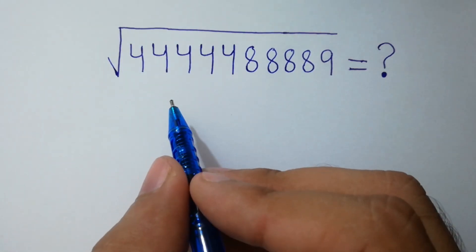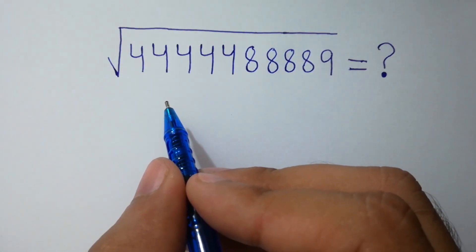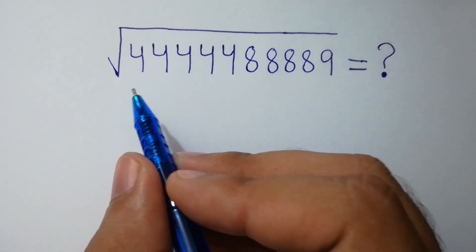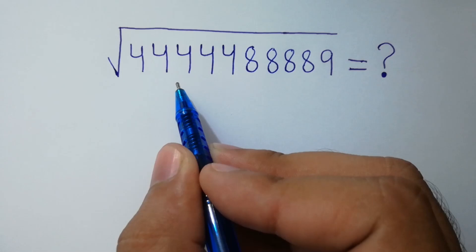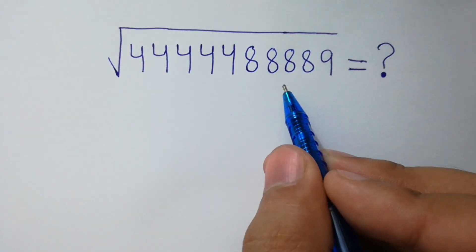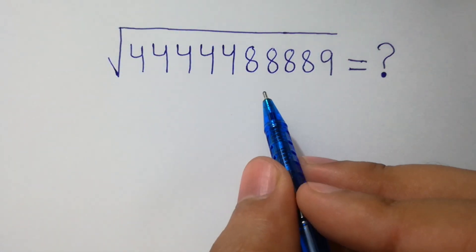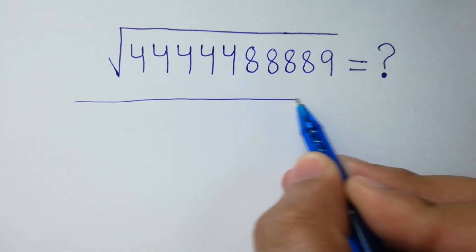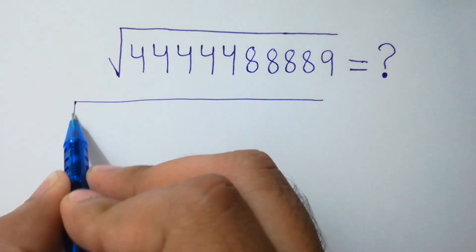Hello friends, can you solve this without using any calculator? Square root of 44444888889. Let's solve it. We can write square root of 5 times 4, 4 times 8, 9.